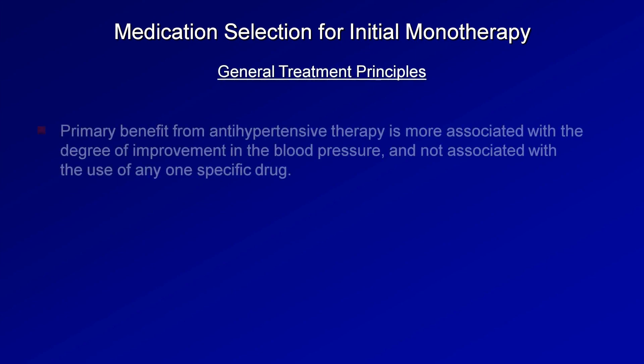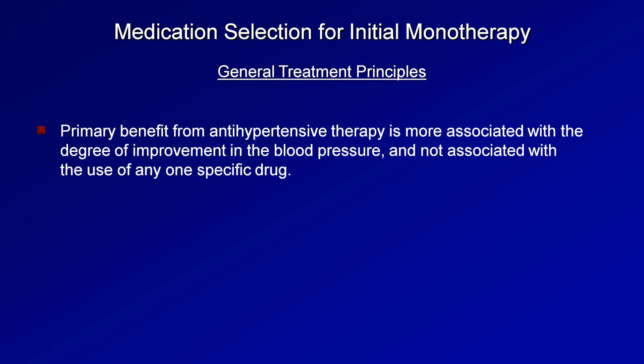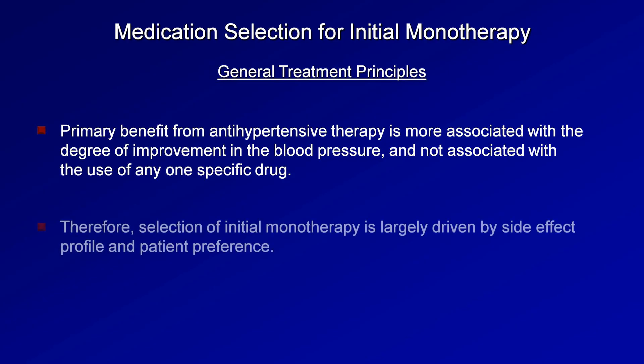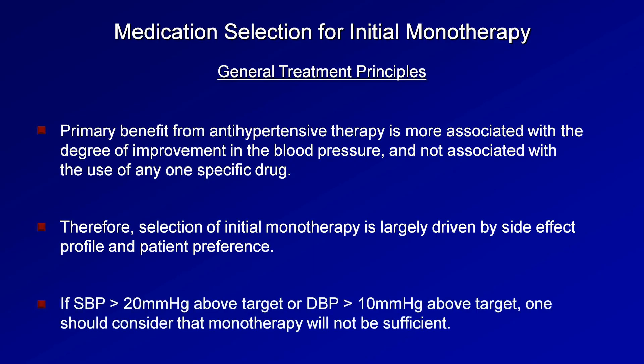With so many choices, once the decision has been made to start an antihypertensive, how does one choose one? The first general principle is that the primary benefit from antihypertensive therapy is more associated with the degree of improvement in blood pressure and not with the use of any one specific drug. Therefore, selection of initial monotherapy is largely driven by side effect profile and patient preference. If systolic blood pressure is more than 20 points above target or diastolic more than 10 points above target, one should consider that monotherapy will not be sufficient and dual therapy might be best even from the start.